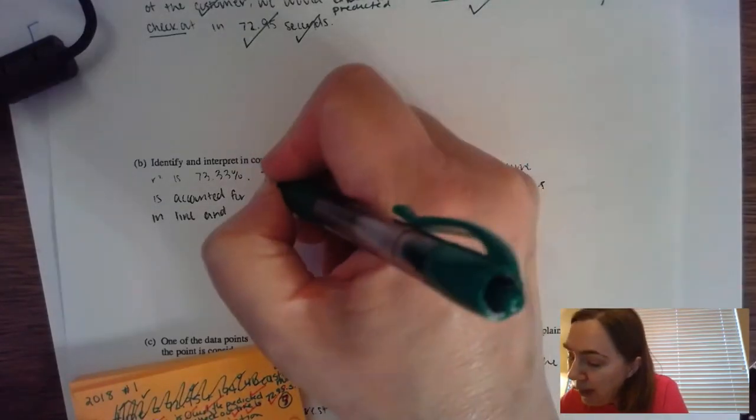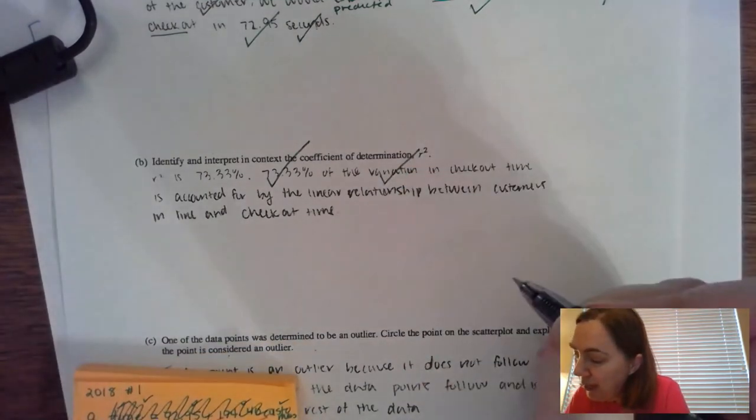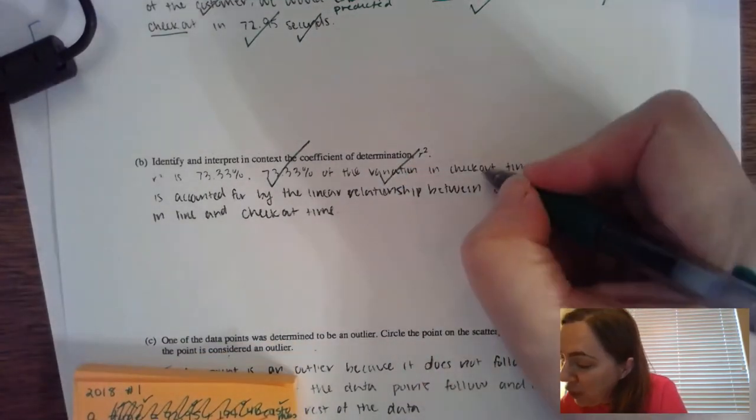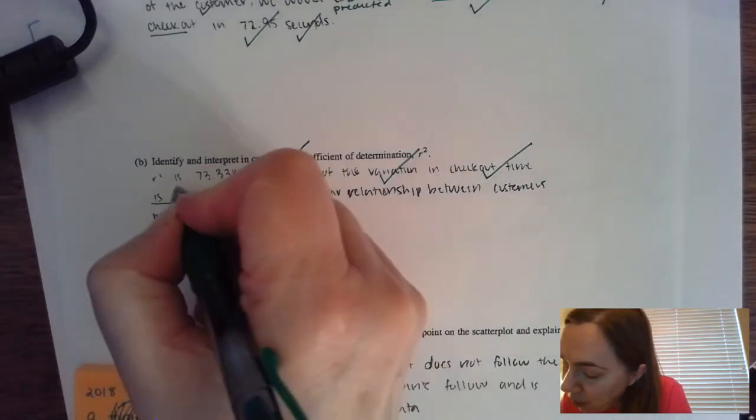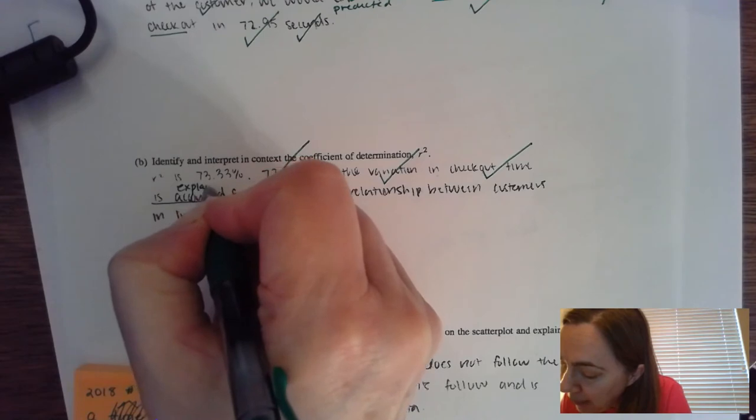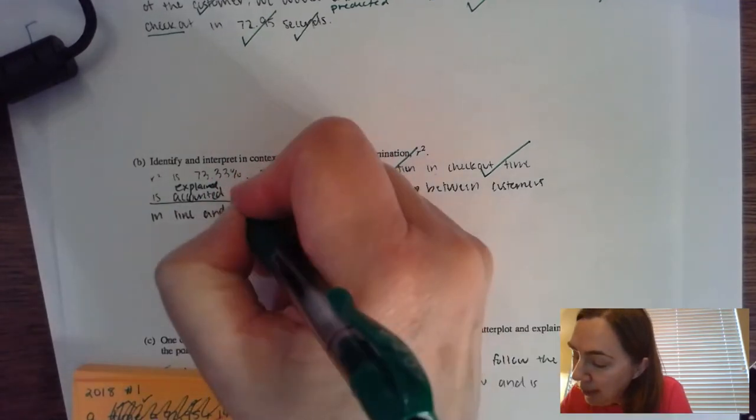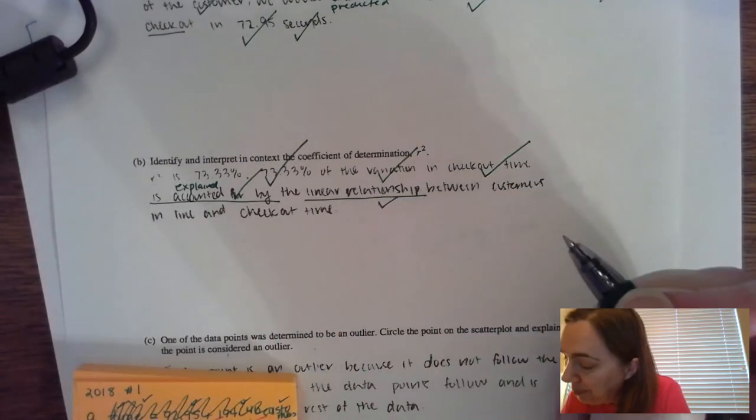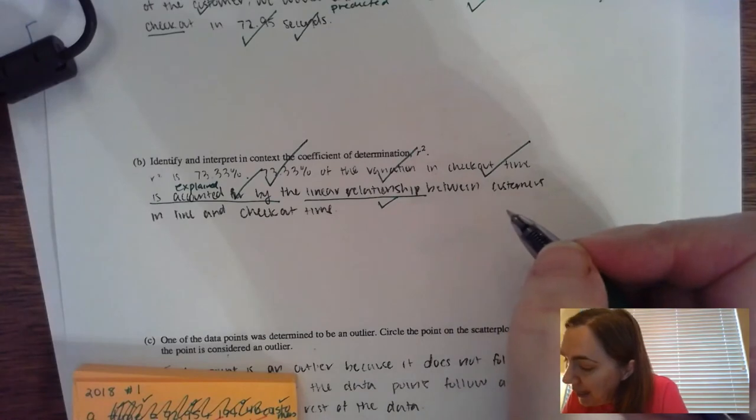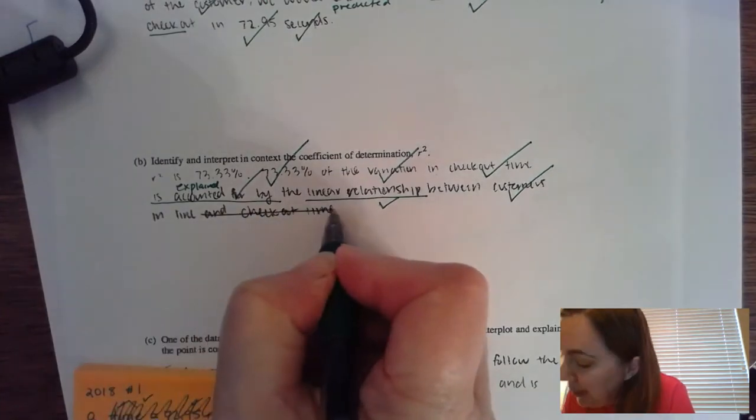So do you have 73.33% of the variation in the y, which would be checkout time, can be explained by, and so I usually will use the word explained by. This person used accounted for by, so that gives you a check, a linear relationship with, in this case, with the x, which is the number of customers in line. I am going to x through that right there.